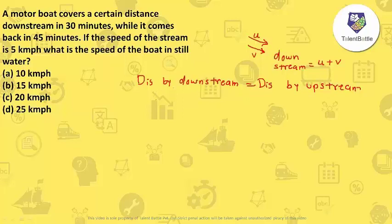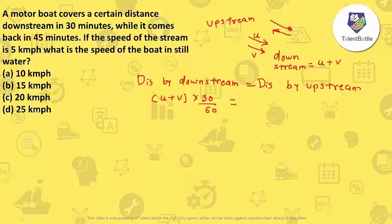The distance traveled downstream equals the distance traveled upstream. Using distance equals speed into time: downstream gives (u + v) into 30/60, and upstream — where the boat and river go against each other, so speed is u minus v — gives (u minus v) into 45/60. Setting these equal: (u + v) times 30/60 equals (u minus v) times 45/60.